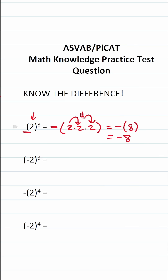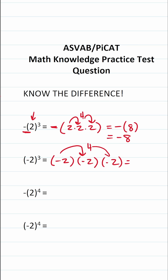You can see how we deal with this negative sign when it's outside the parentheses. When the negative sign is inside the parentheses, we have negative two to the third power, and it becomes negative two times negative two times negative two. Negative two times negative two — a negative times a negative — is positive four. Then positive four times negative two is negative eight. So in this case, we get the same answer regardless of where that negative sign is.